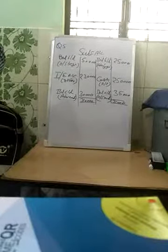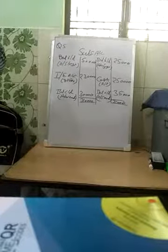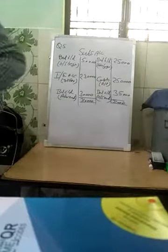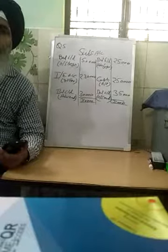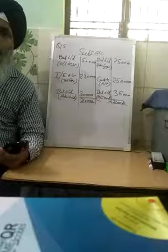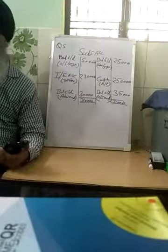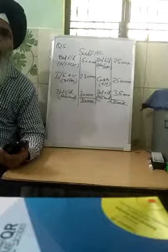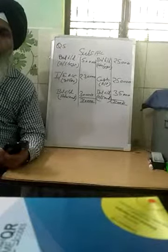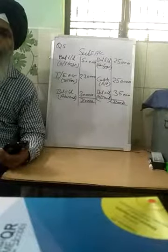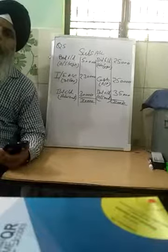In today's class we will cover the topic of Subscription numericals. One thing is common in all questions — that is Adjustment. In our class you have earlier studied: outstanding will be plus and prepaid will be minus. But in 12th class you have double the amount of outstanding and double the amount of advanced.